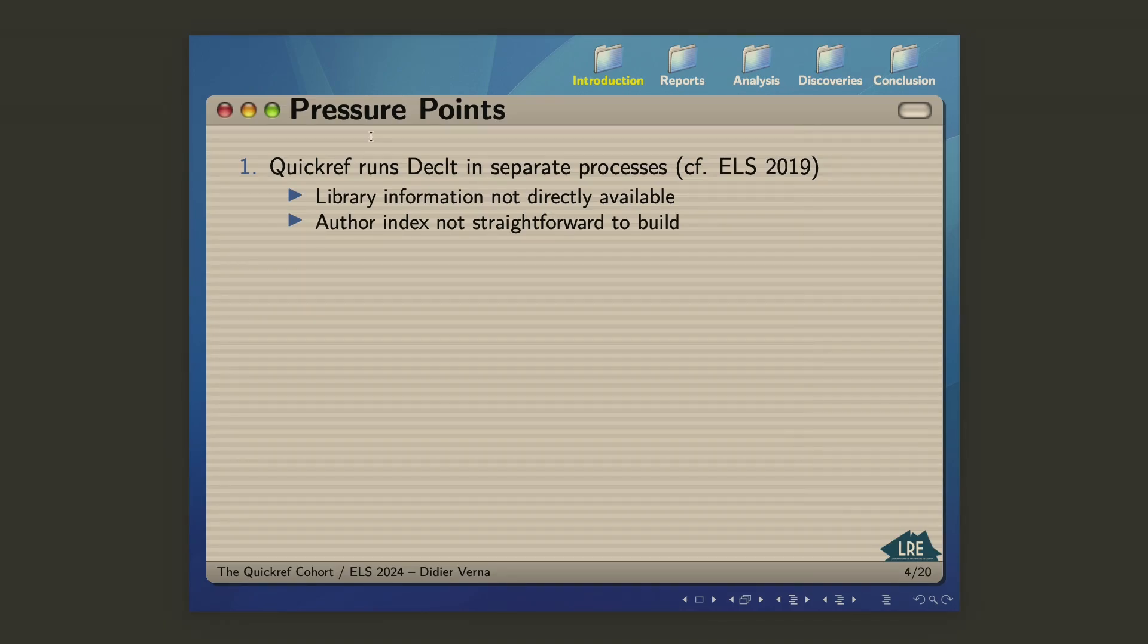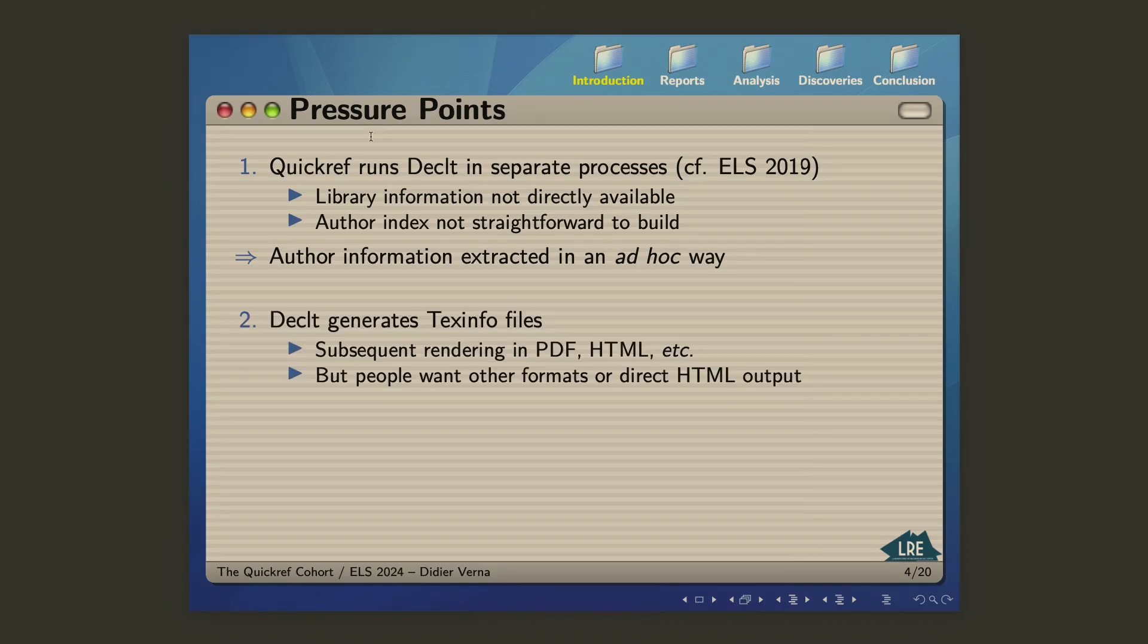So it's unrealistic to do so. And one of the consequences is that in order to build the QuickRef author index, I need author information from the libraries. But that information is not directly available to QuickRef because DECLET is run in separate processes. So at a certain point in time, I had to actually patch DECLET specifically to extract that information, which of course is not really satisfactory.